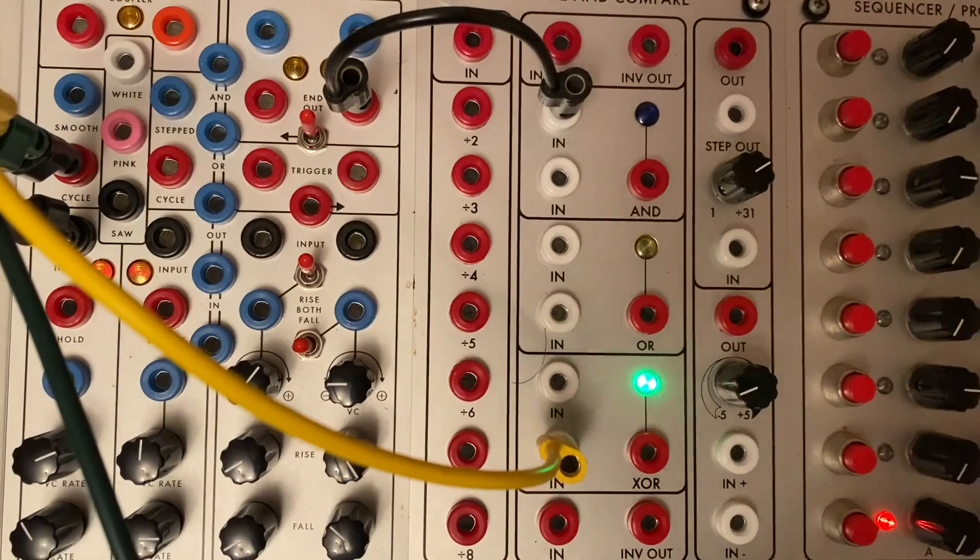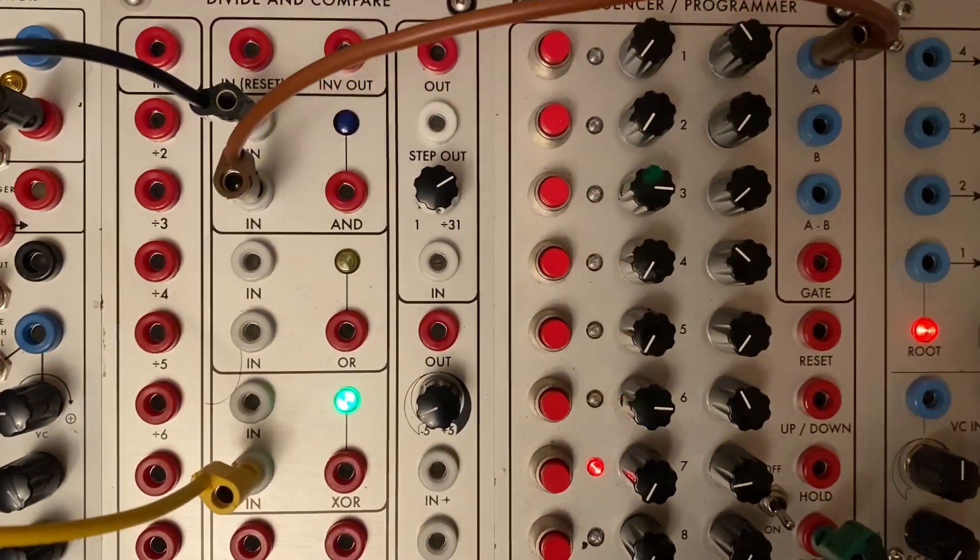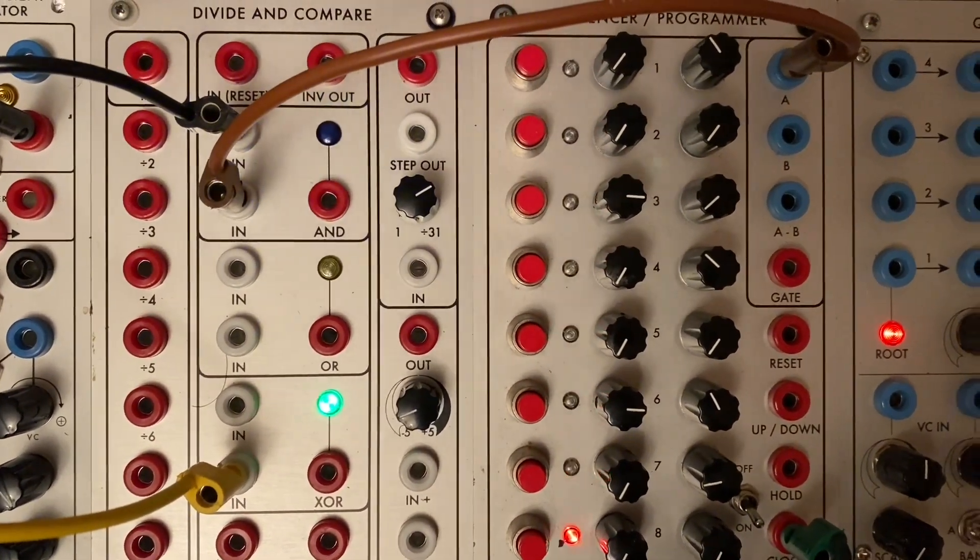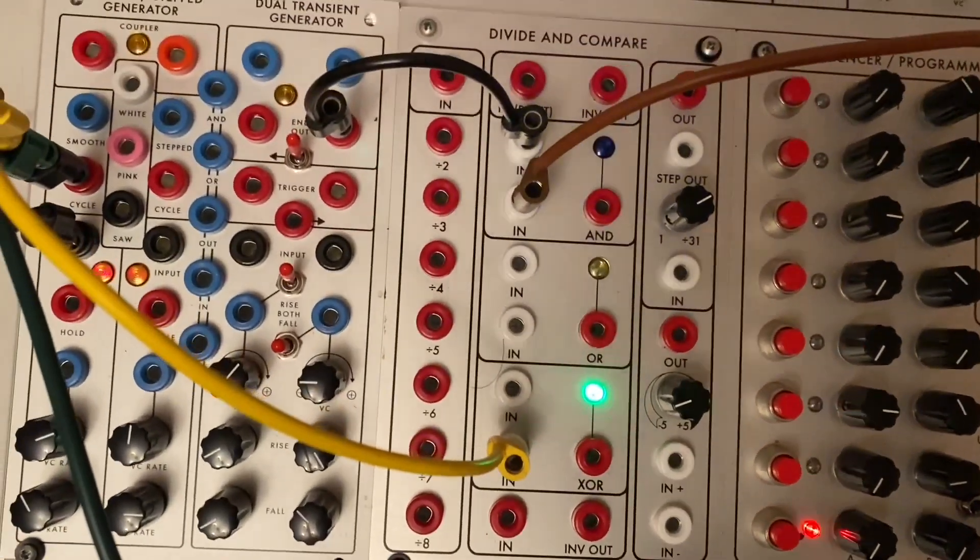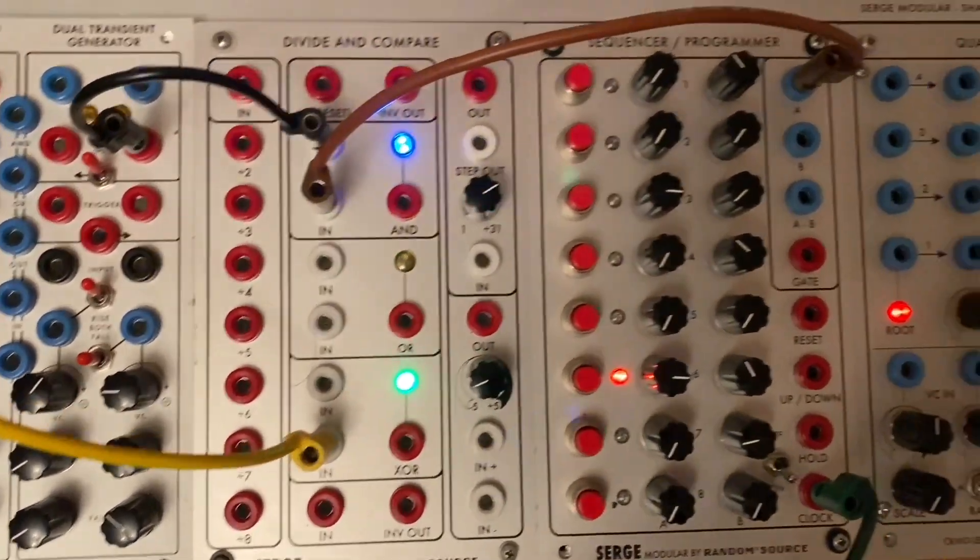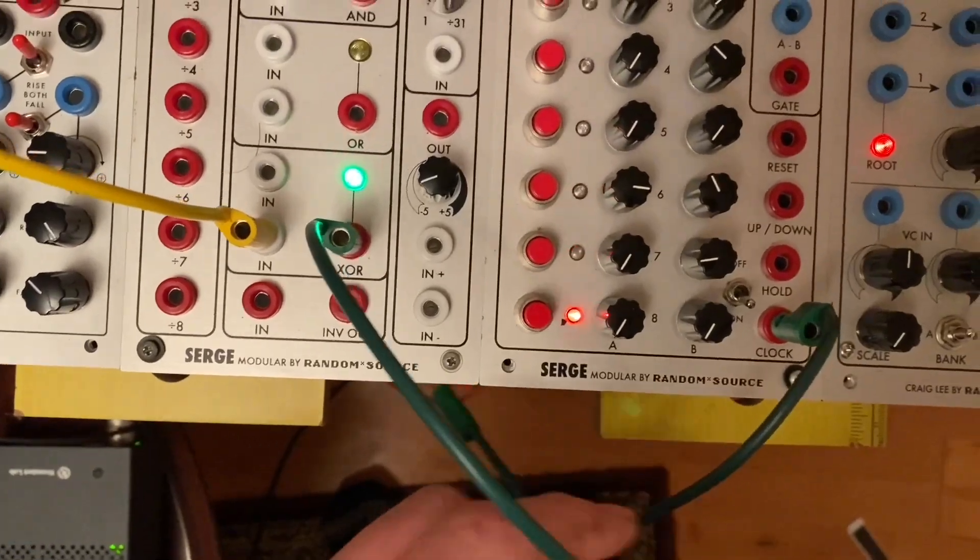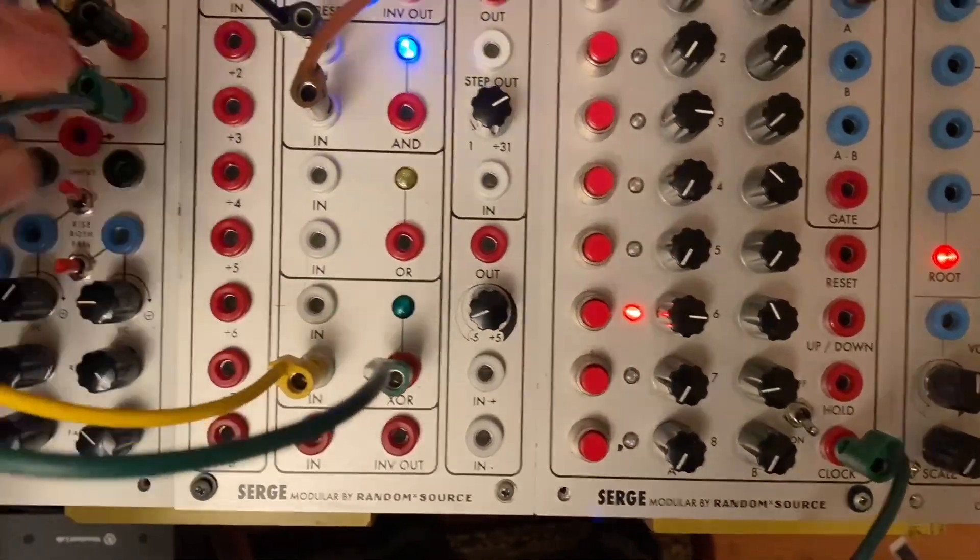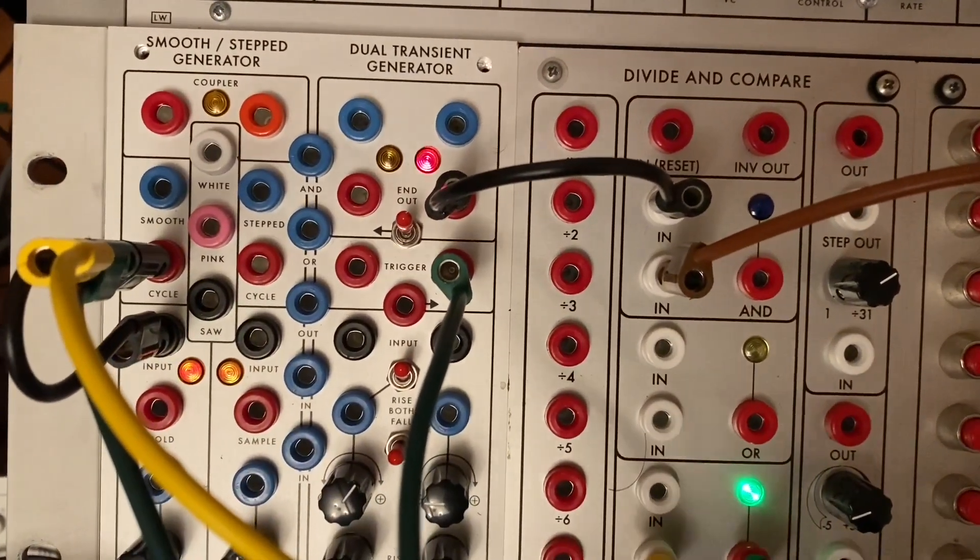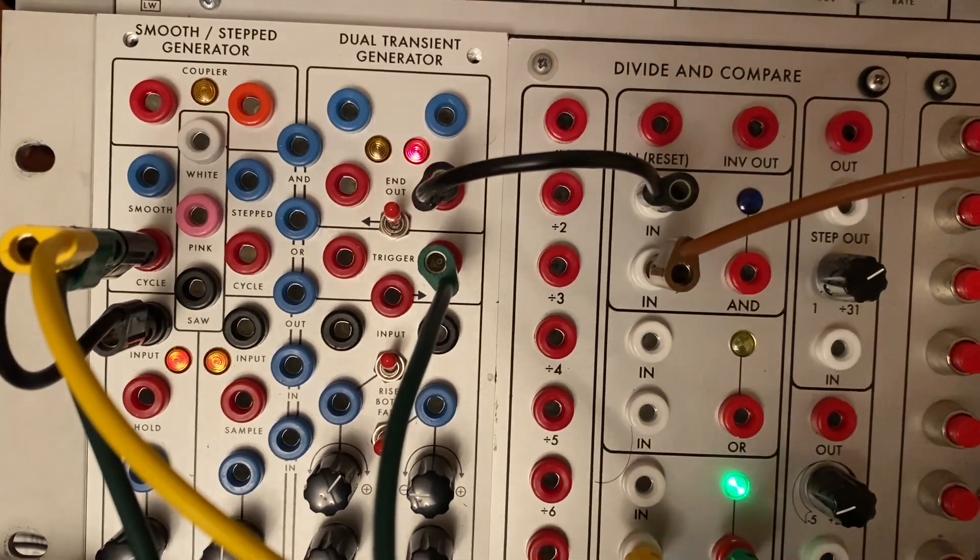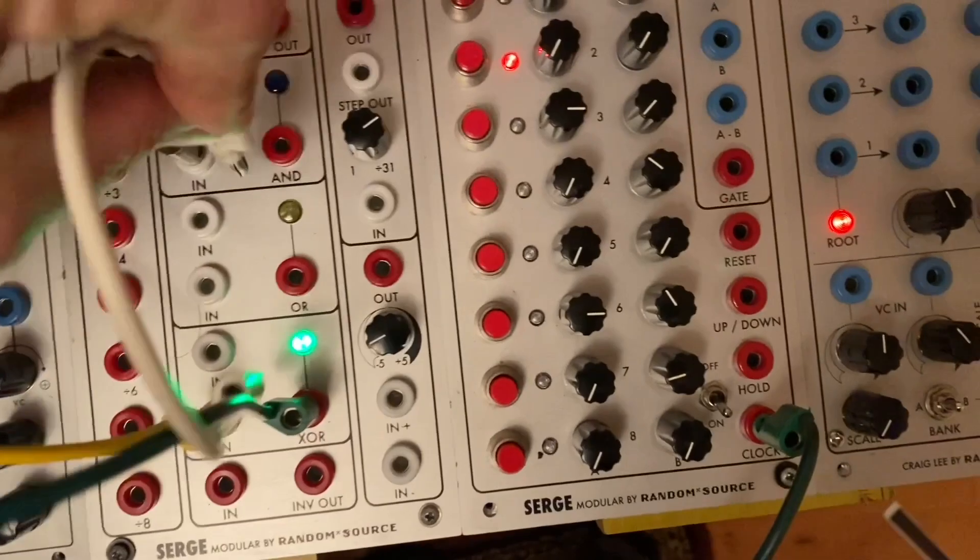We'll patch the output of one of our transient generators into the AND module. And building on a trick from the previous patch, we'll use the sequencer's output and patch that into the other input of the AND. Now the voltages give us a threshold-based event generator. You can see that in action here in the lights coming out of the AND module. We'll patch the output of the exclusive OR into the trigger input of our dual transient generator. The only thing feeding that exclusive OR module right now is the cycle output of the smooth generator. That is giving us effectively a steady pulse that is triggering the transient generator and providing a clock source for our sequencer.